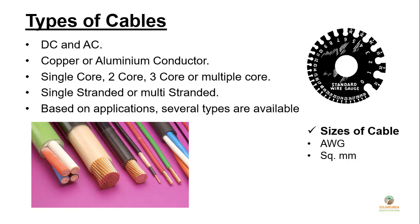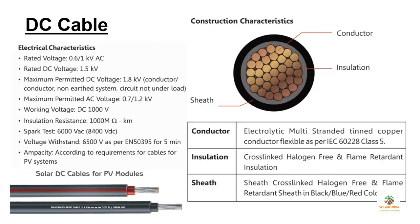As you increase the gauge number, the size decreases. On the other hand, we also have cable sizes in square millimeters, like 4 square mm, 6 square mm, etc., referring to the cross-sectional area of the cable. These are the specifications of a DC Polycab cable. As you can see in the construction characteristics, there is an outer sheath, there is insulation, and after that you can find the copper conductor — a standard tin-plated copper conductor.